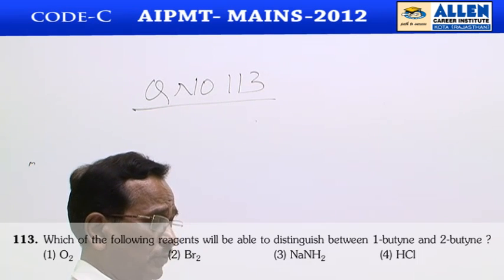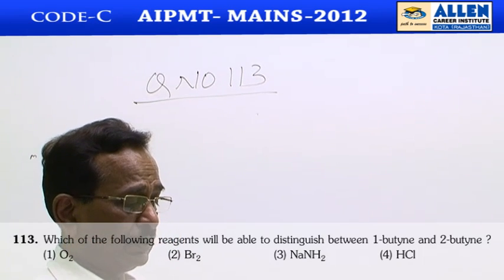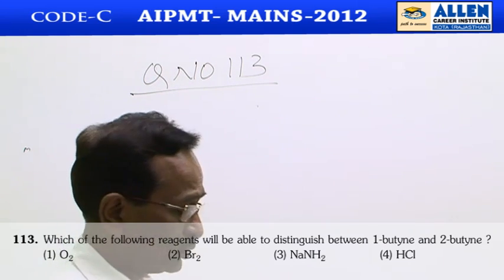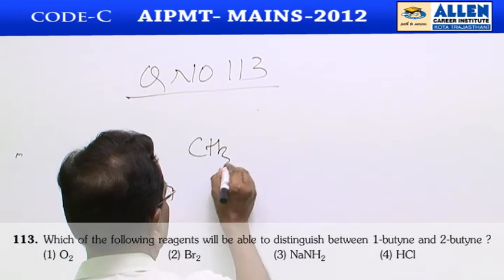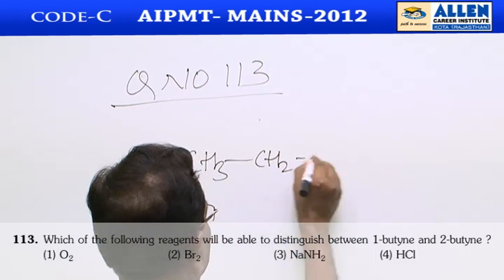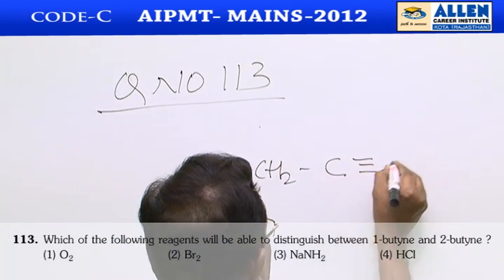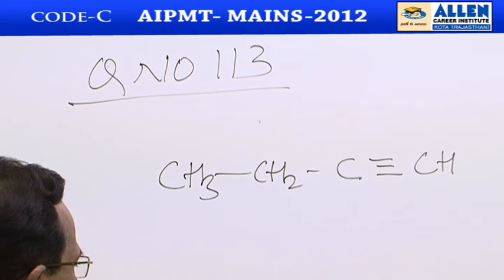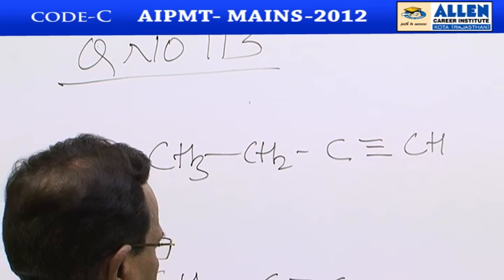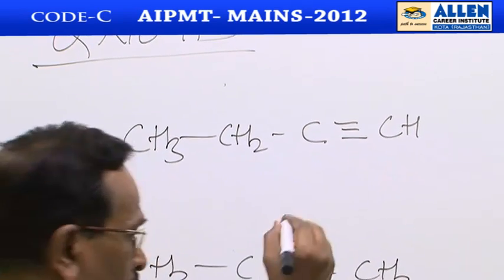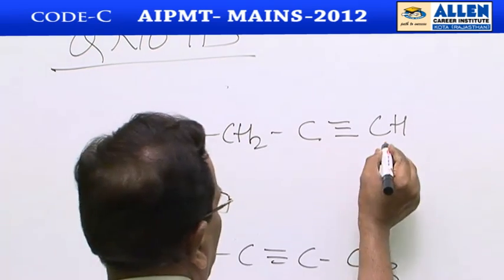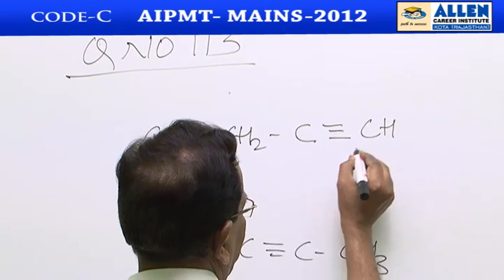Question 113: Which of the following reagents will be able to distinguish between 1-butyne and 2-butyne? Very simple question. This is 1-butyne and this is 2-butyne.